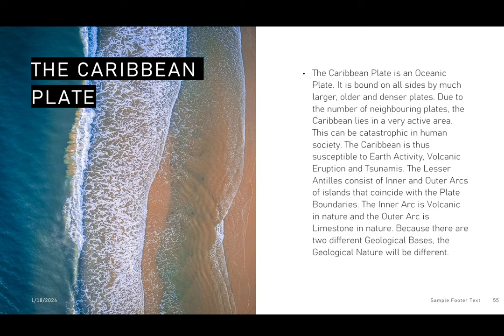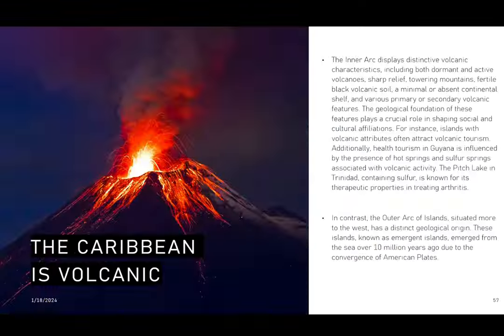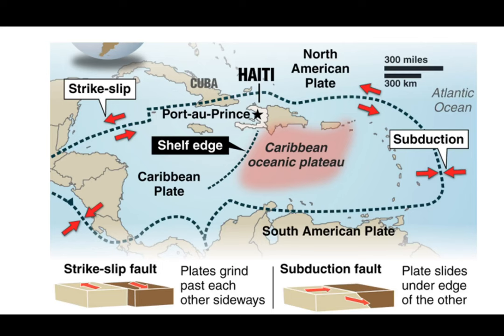The Caribbean is susceptible to volcanic eruptions and tsunamis as well. The Lesser Antilles consists of inner and outer arcs of islands that coincide with plate boundaries. That plate boundary and margin allows for the creation of the Lesser Antilles through volcanic activity. Looking at a diagram of the Caribbean plate, we can identify key features of the region.